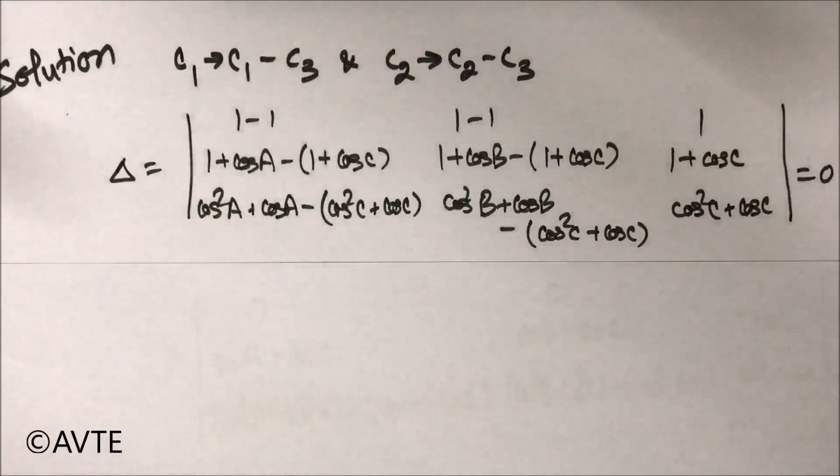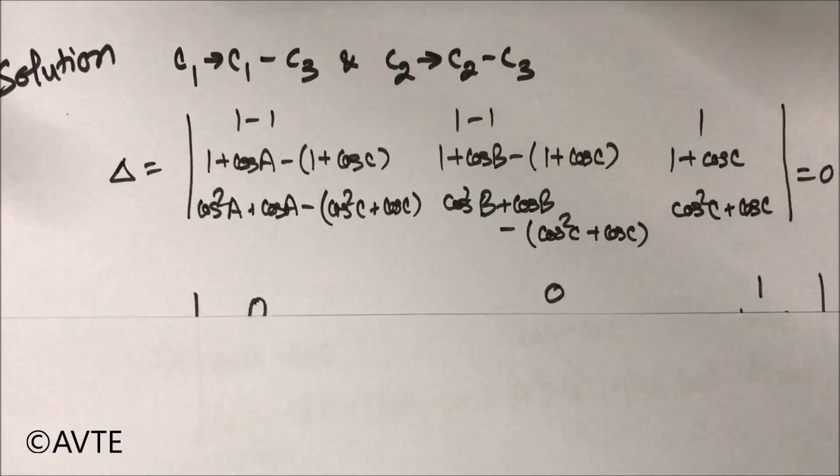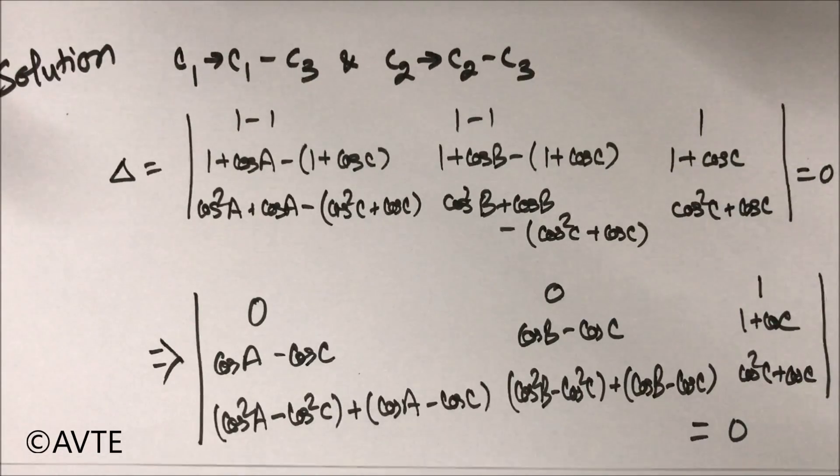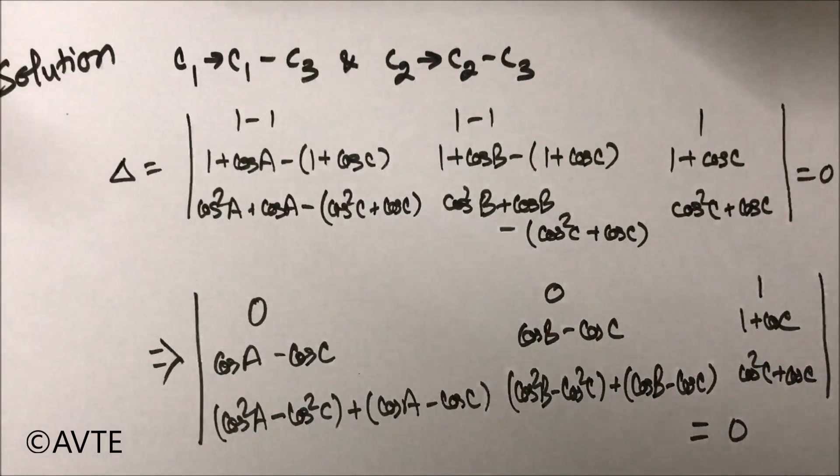So you can see, and on further simplification, I'm sure you will do it like this. This is the simplification. And now what you can do, you can either take that to two cross two or you will be interested in taking cos A minus cos C common from column one or cos B minus cos C common from column two.